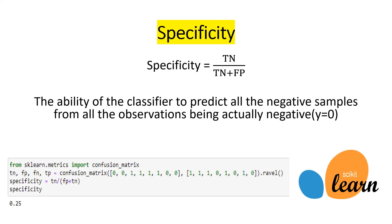We have specificity, which equals the True Negative divided by the True Negative plus the False Positive. It is the ability of the classifier to predict all negative samples from all observations that are actually negative — so where y equals zero, we want the fraction of y-hat equals zero given y equals zero. Specificity is not directly available in scikit-learn, but we can import the confusion matrix, extract the four outcomes, and implement the formula manually.